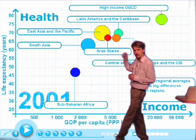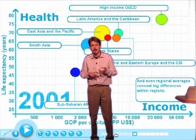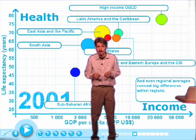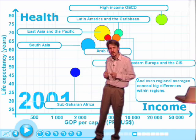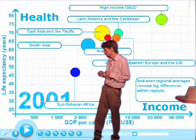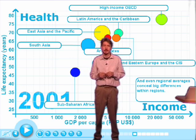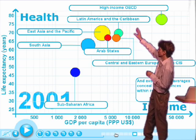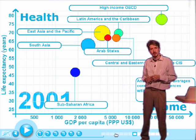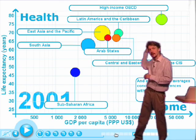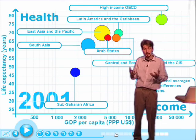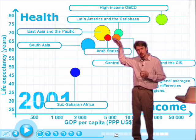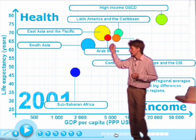The rich countries up there are Western Europe, Canada, United States, Japan, and Australia. Down here we have Sub-Saharan Africa with a life expectancy rate under 50 years of age. We can also see that Latin America up here has passed Eastern Europe, who went backward in economy during the 1990s — moving to the left in the graph, not so much down but to the left.